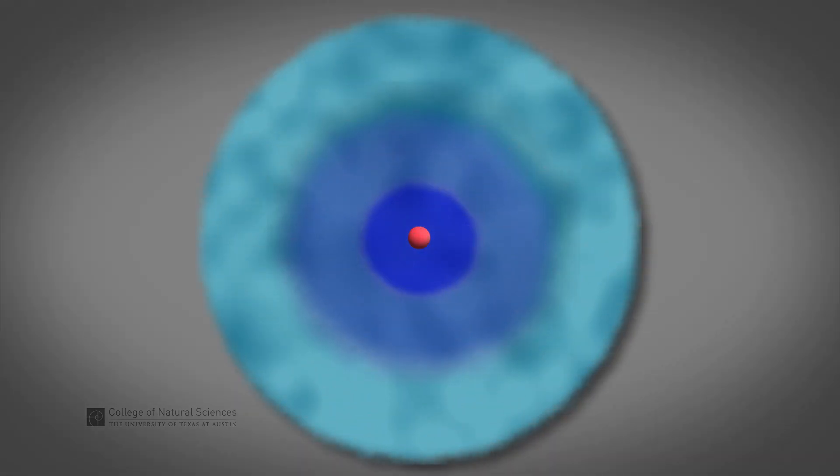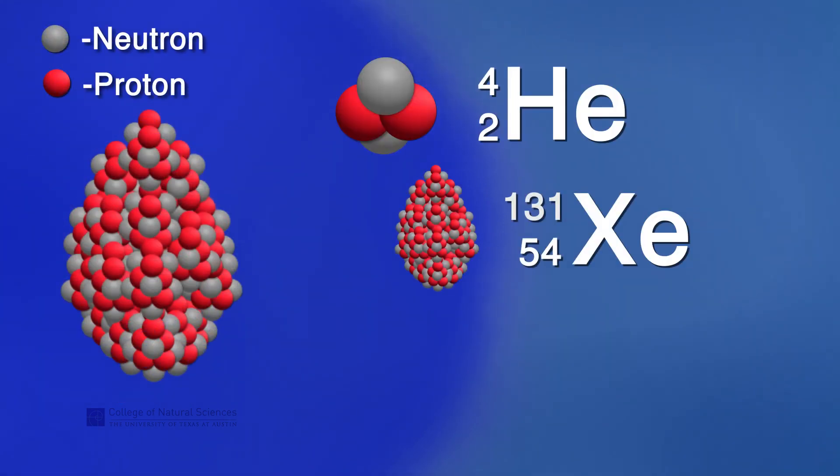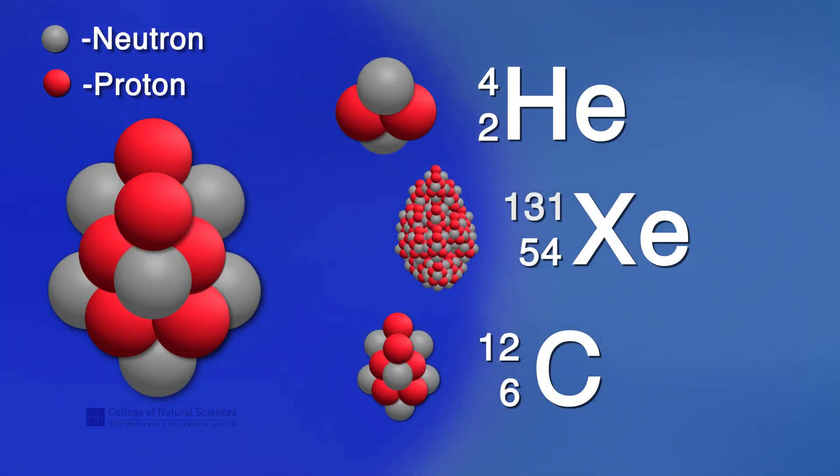That's not true in nuclear chemistry. In nuclear reactions, we're actually changing the nucleus of the atoms. Because the type of atom, whether it's helium or xenon or carbon, depends on the number of protons, if we change that number, then we change the kind of atom that it is. In nuclear chemistry, that's exactly what happens.